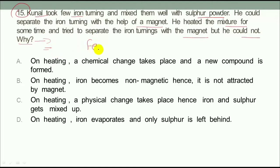Kunal took some iron and mixed it with sulfur. It has a magnet. It can separate iron with the help of the magnet. When we mix it with iron and sulfur, when we heat it, there is a new substance formed. It is called iron sulfide. Iron sulfide is a new substance formed and this is our chemical change.